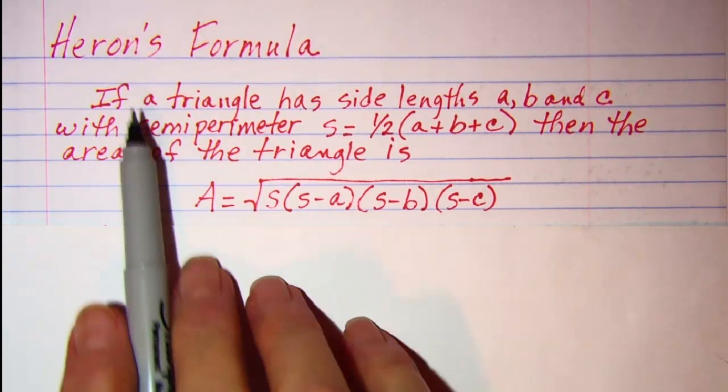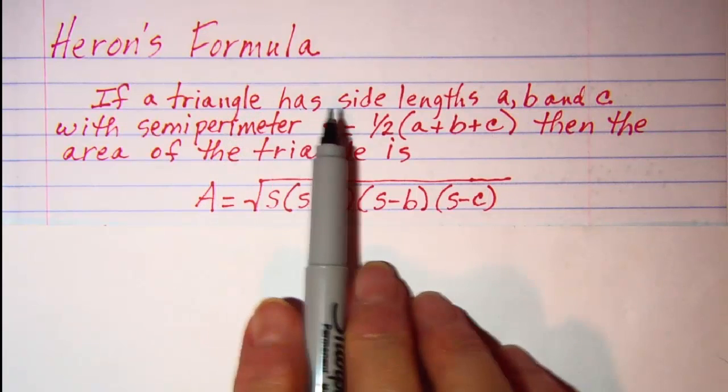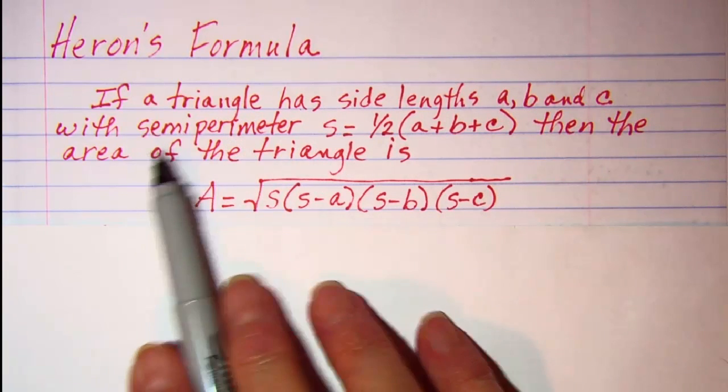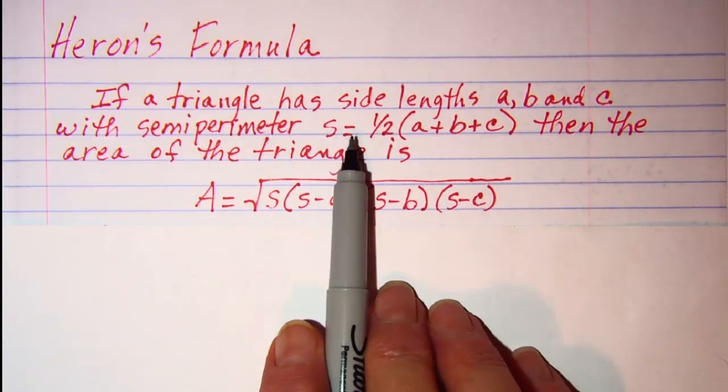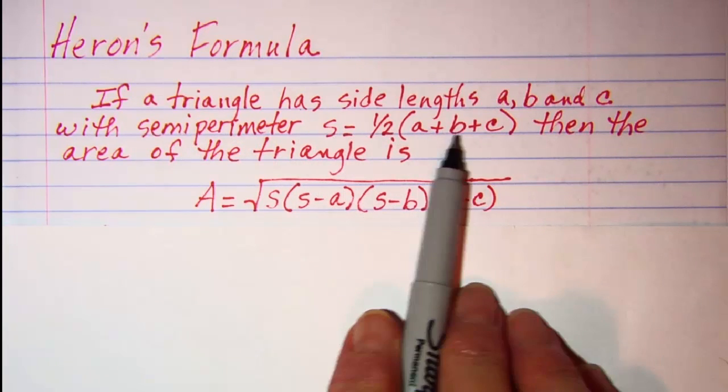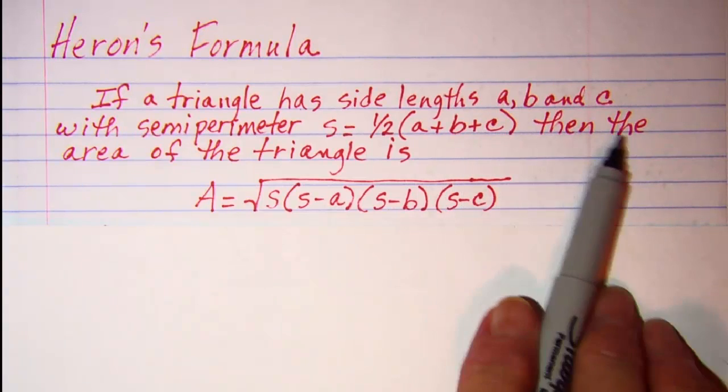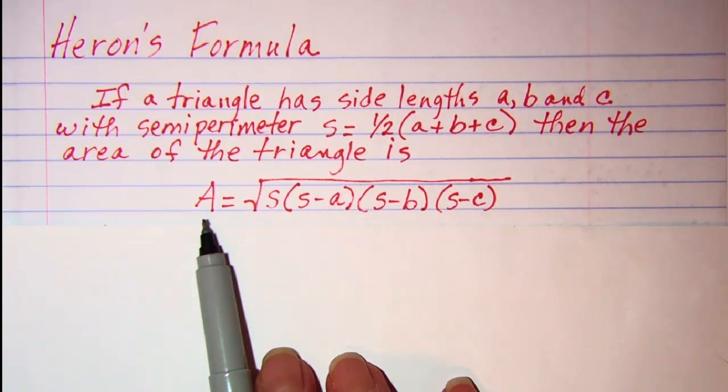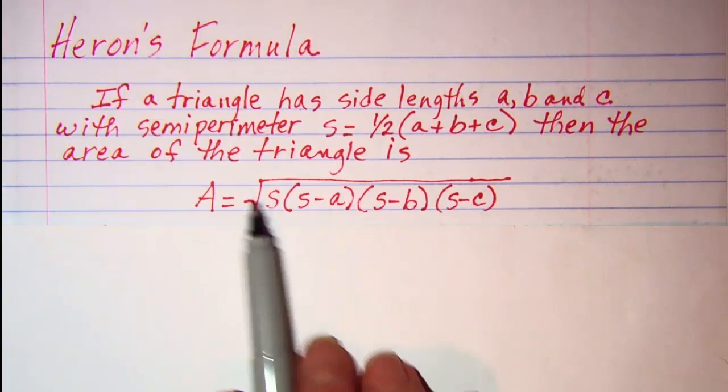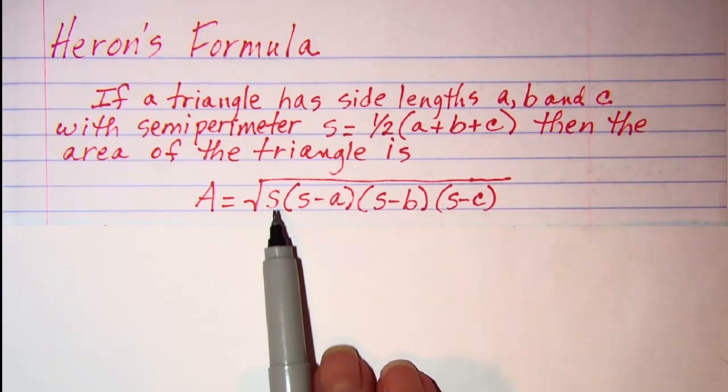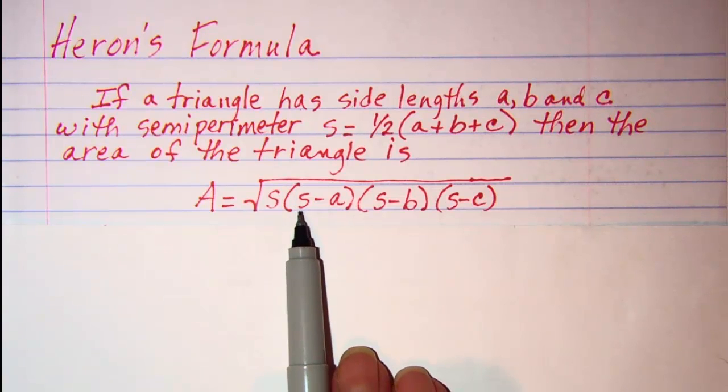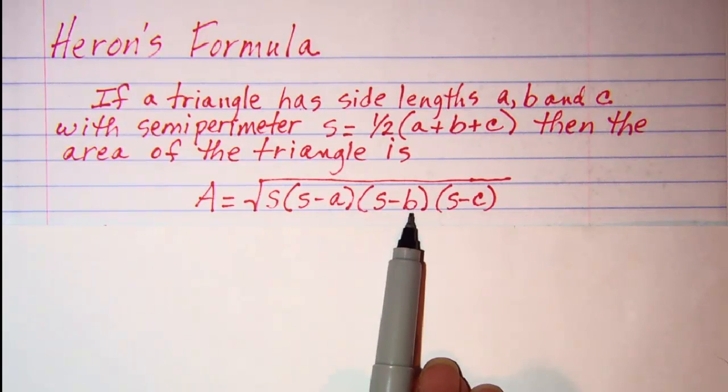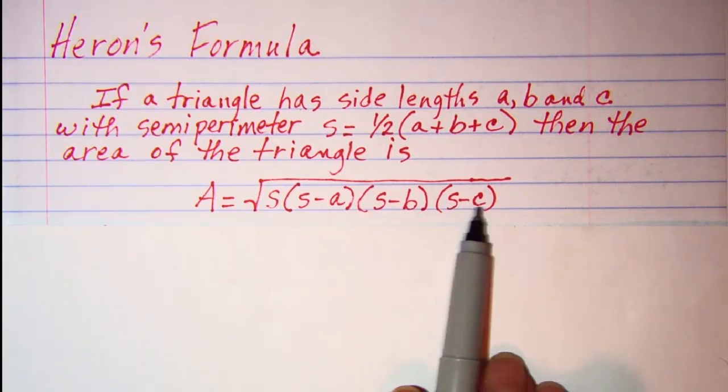Heron's formula states that if a triangle has side lengths A, B, and C, with a semi-perimeter S, which equals one-half the sum of A plus B plus C, then the area of the triangle is given by the formula: area equals the square root of the product of S times the quantity S minus A times the quantity S minus B times the quantity S minus C.